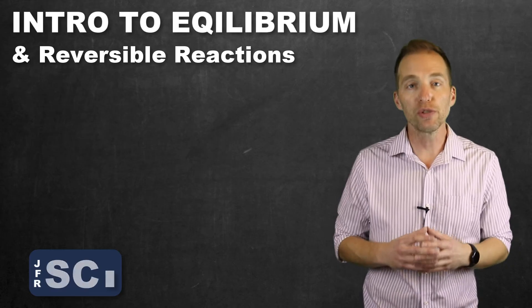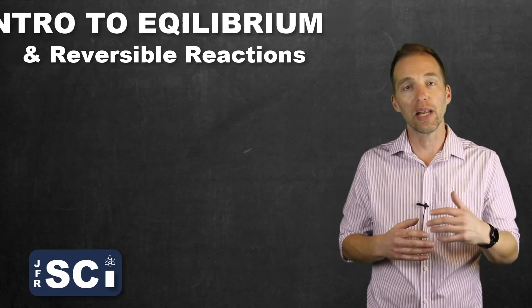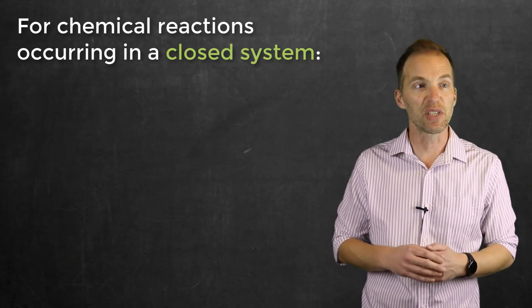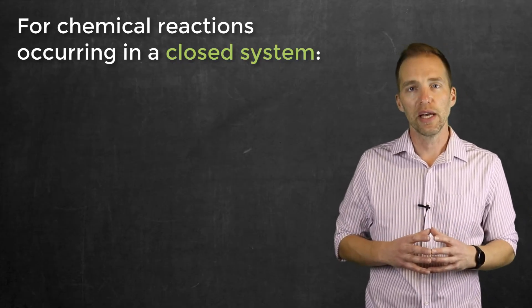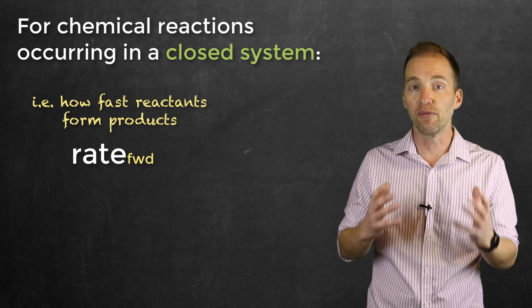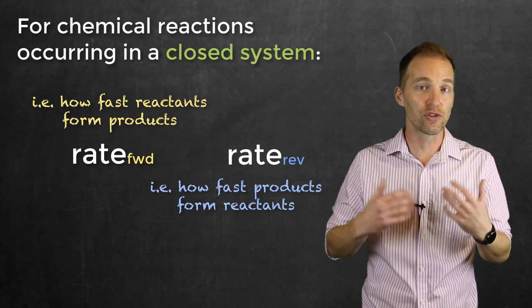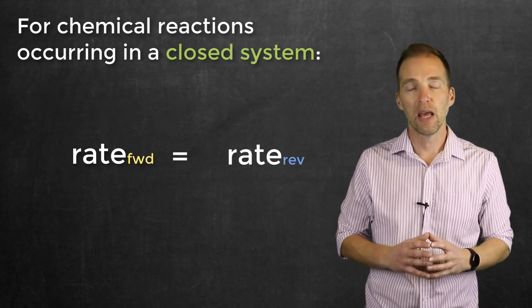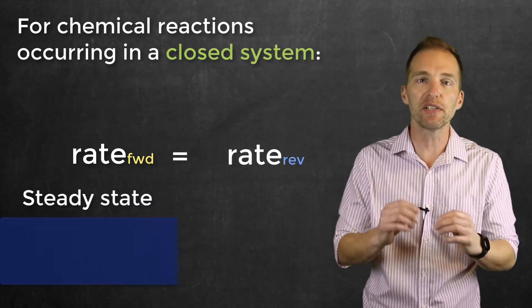But if we can create a closed system — one at which we don't allow any more reactants in, and we don't allow any product out, and we don't allow any changes in the conditions of that system, such as changes in temperature or changes in pressure — eventually what we're going to observe is a point at which the rate of the forward reaction and the rate of the reverse reaction are equal. And what we would observe is, well, nothing. We would have achieved a steady state.